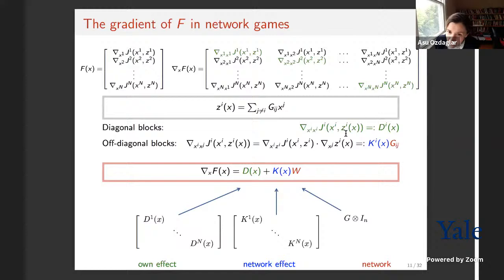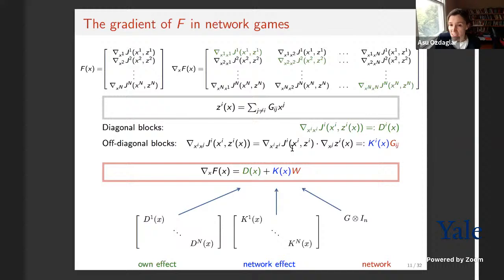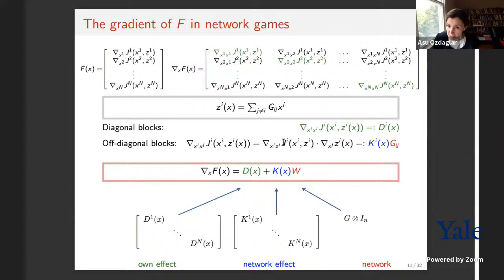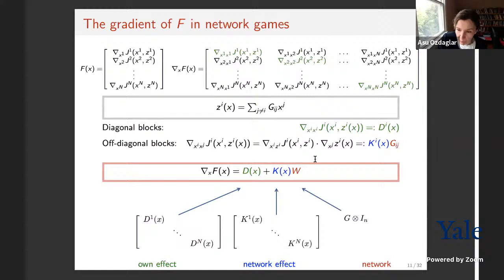This allows isolating the network's effect in the payoff. I call the term ∂²J_i / ∂x_i ∂z_i by K_i — capturing how my strategy interacts with the aggregate — and then the Jacobian of F for network games decomposes as D(x) + K(x) ⊗ G, where D captures own-action effects, K captures cross effects between my strategy and the aggregate, and G is the network adjacency matrix. This decomposition separates network structure from payoff function properties.